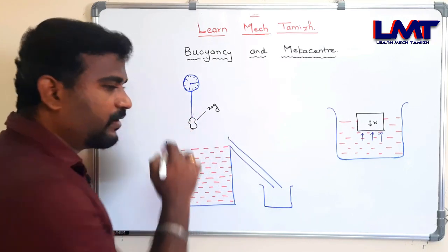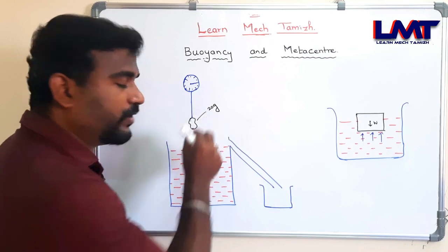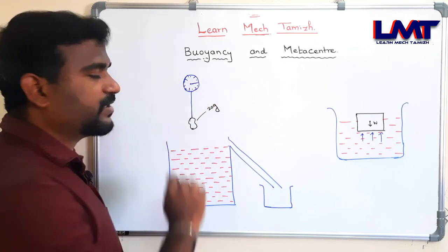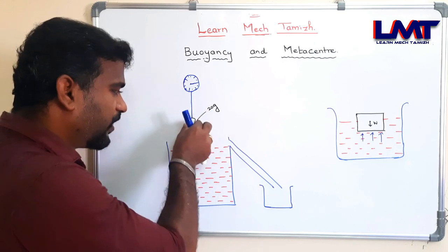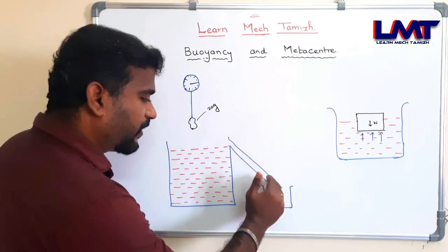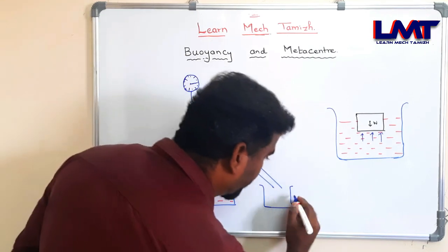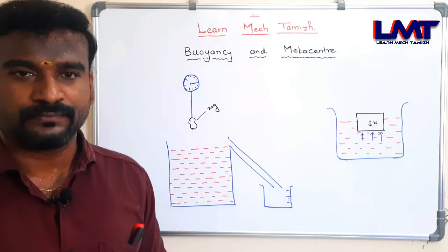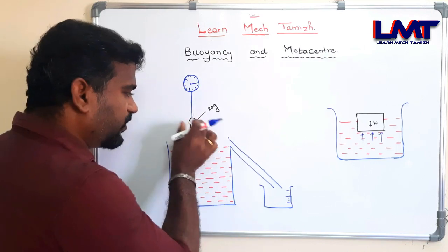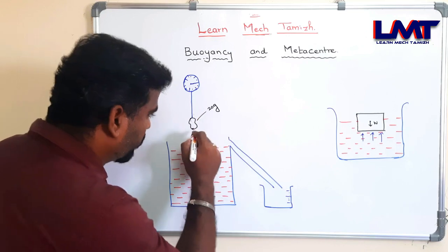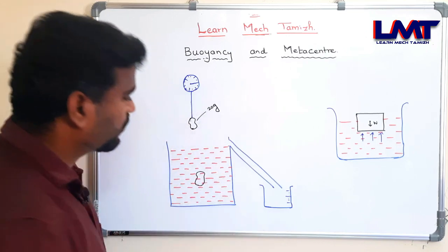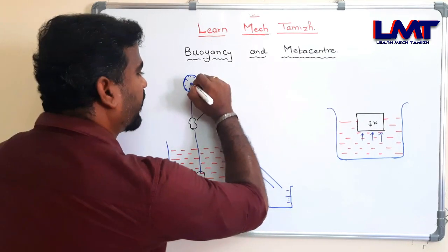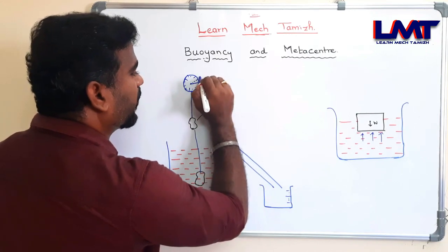Now we have a stone. The stone weighs 20 grams. It is attached to a spring balance, and we record its weight in air as 20 grams. Now we immerse the stone into the water. The spring balance now reads 15 grams. So the apparent weight of the stone in water is less than in air.